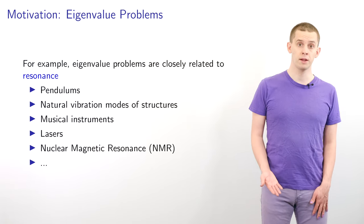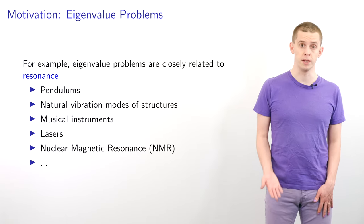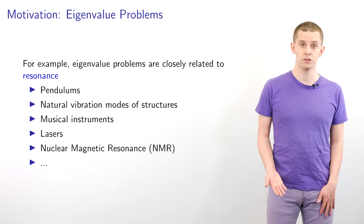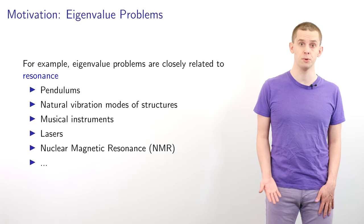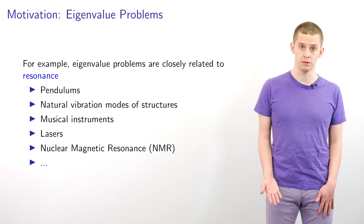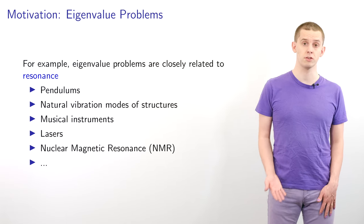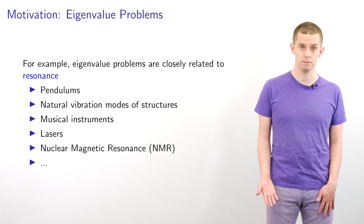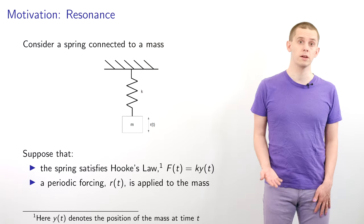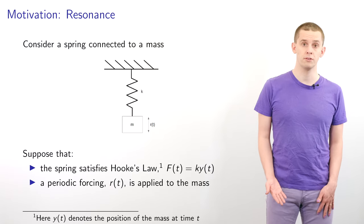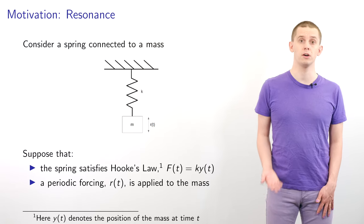For example, eigenvalues and eigenvectors are closely related to the phenomenon of resonance that we see in many different situations. If we look at the oscillations of pendulums or the natural vibrations of structures or of musical instruments, then we find that we can explain these using resonance. Resonance is also crucial for several technologies such as lasers and nuclear magnetic resonance. To illustrate resonance, let's now look at a spring connected to a mass m, and let's suppose that the mass's vertical displacement is given by y of t, where t is time.